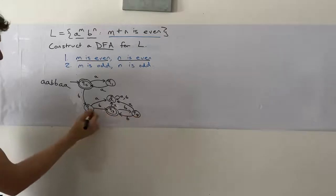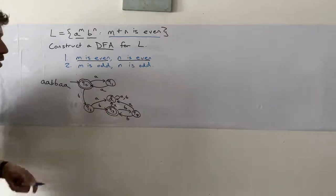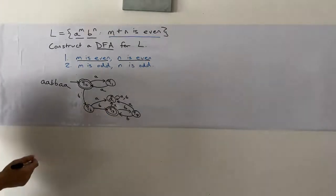So if we're in any one of these three bottom states, and we see an A, then we should never accept the string, which means we go to D. Cool.